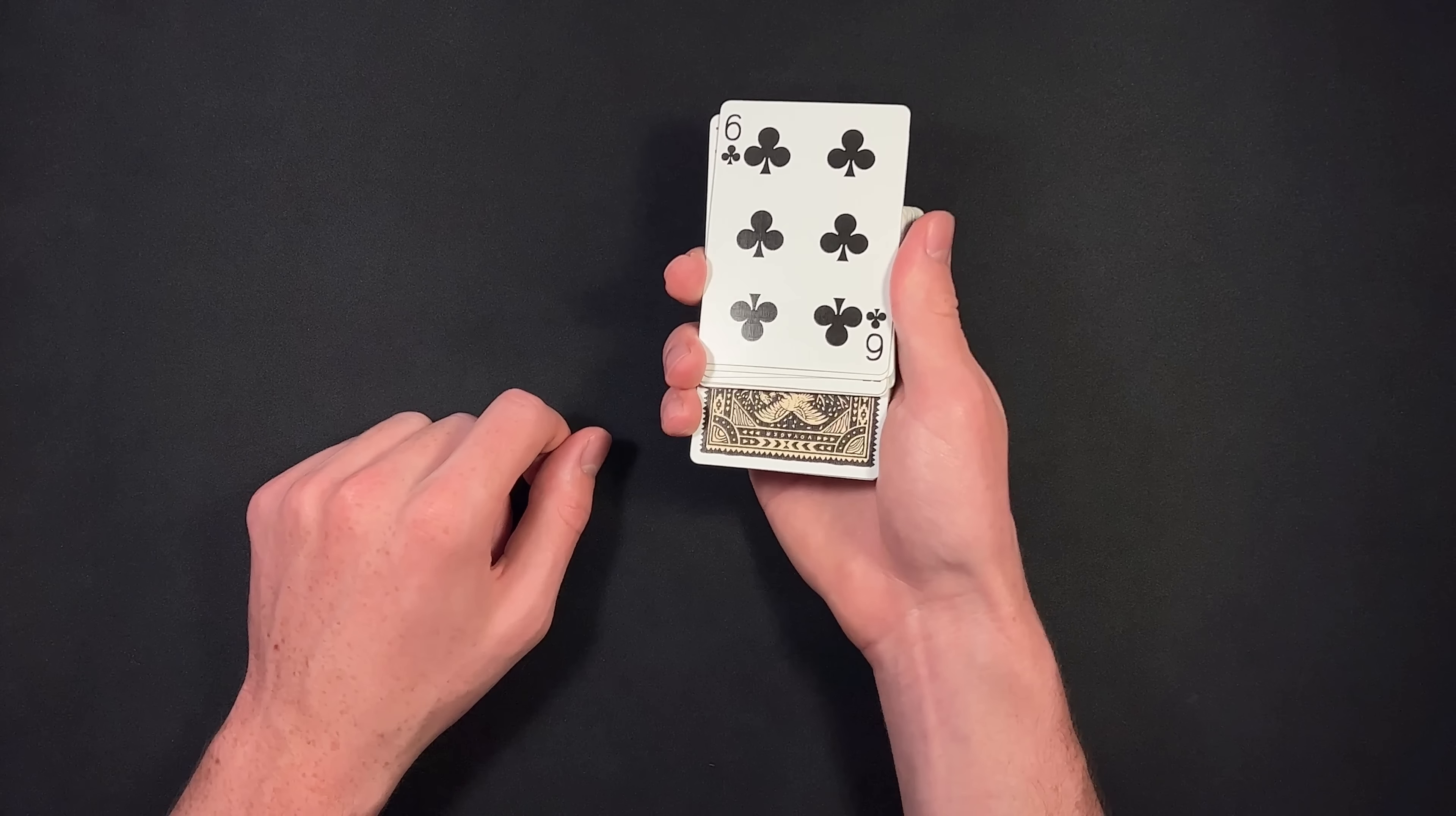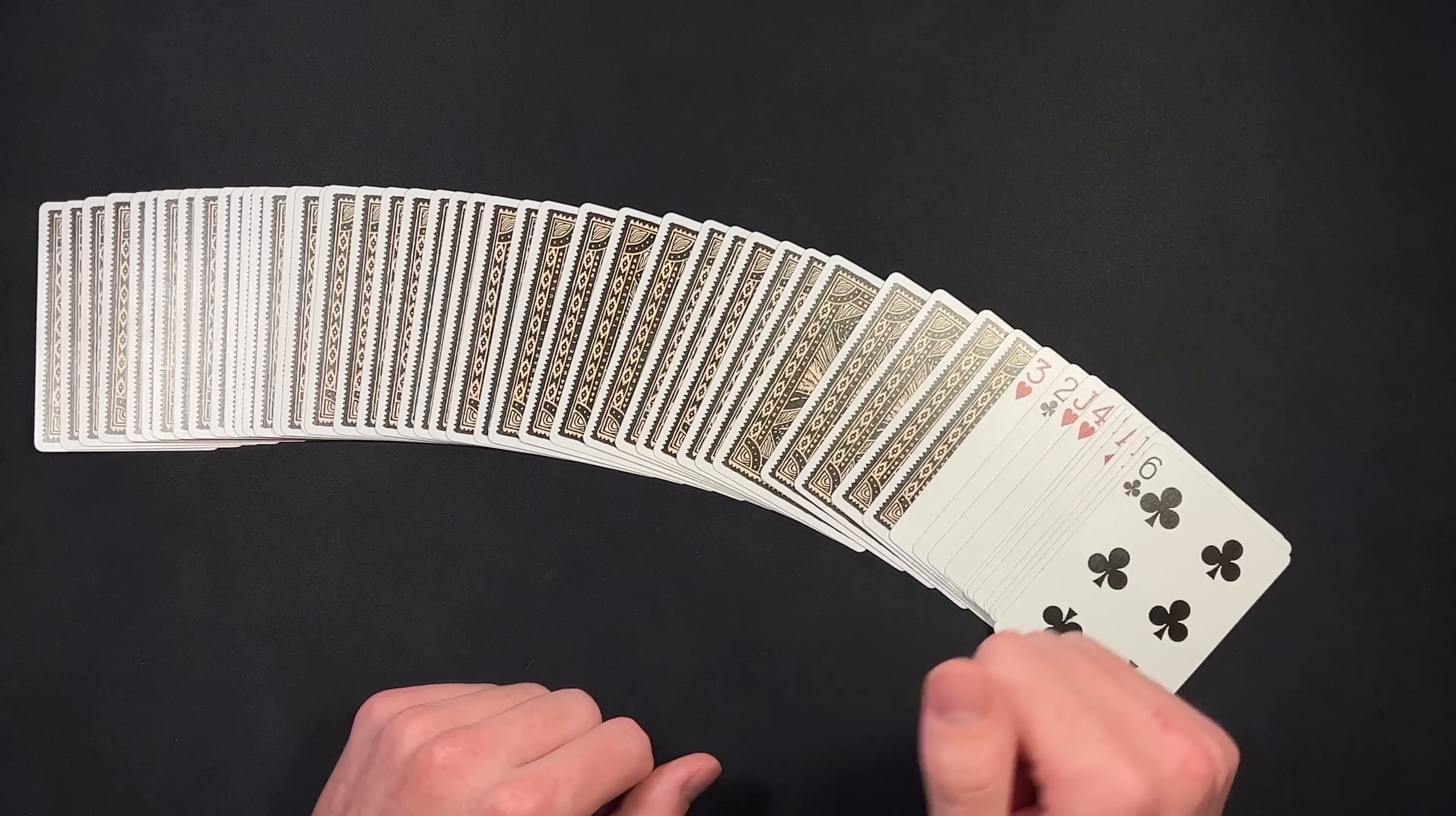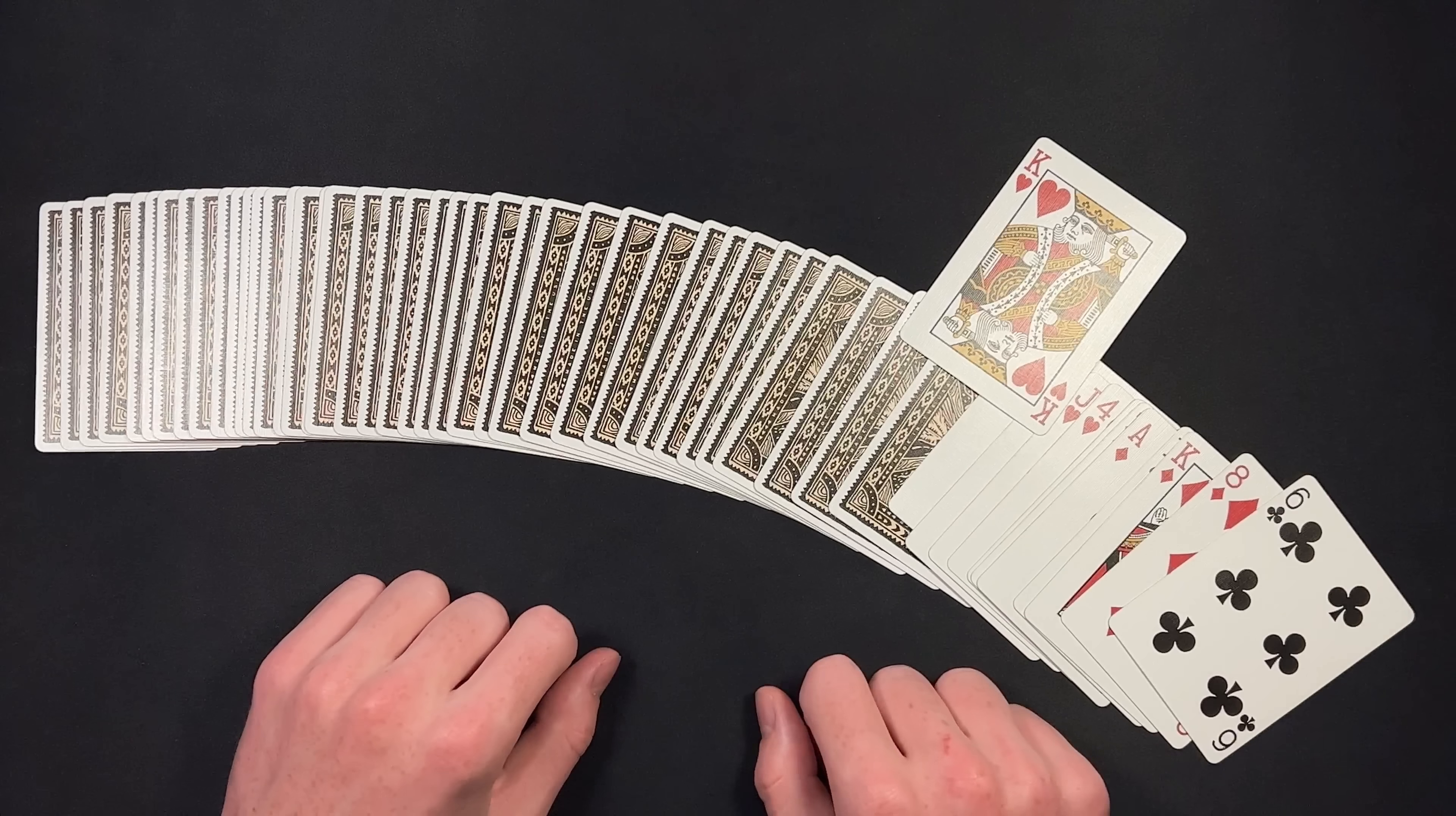Now your spectator can in fact call stop at any point. So let's say they tell you to stop right here. You'll see when you square up the pack, this card, which is their selection, remember it's reversed, it's going to automatically be the first face down card. When you spread out the deck like this, your spectator is not going to know that. They're truly going to think this is the random card that they ended on when they told you to stop dealing. You make the point that their card was lost somewhere in the deck. They could have called stop anywhere and they happened to call stop on this first face down card. They can even turn it over and it will be their selection. They will be completely blown away. This one does have a very powerful effect that is going to impress all your spectators.